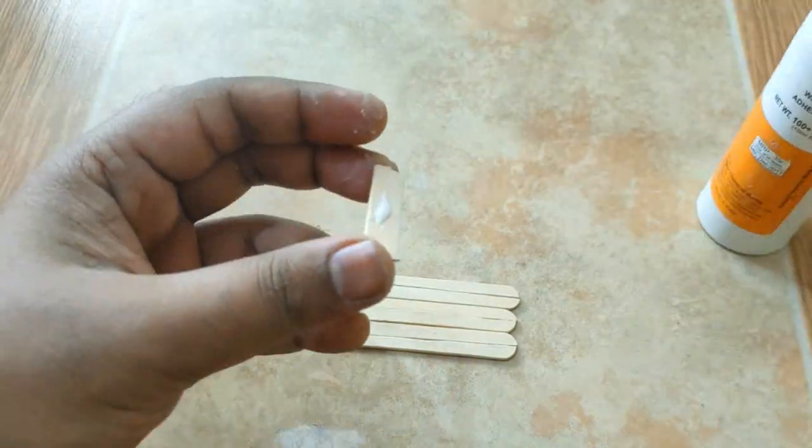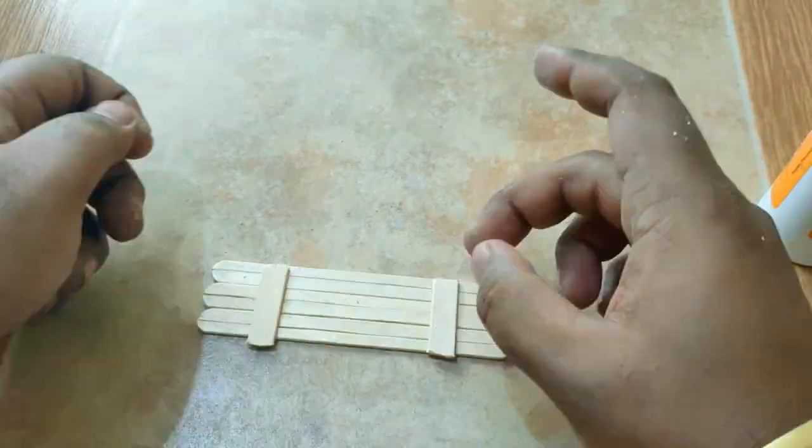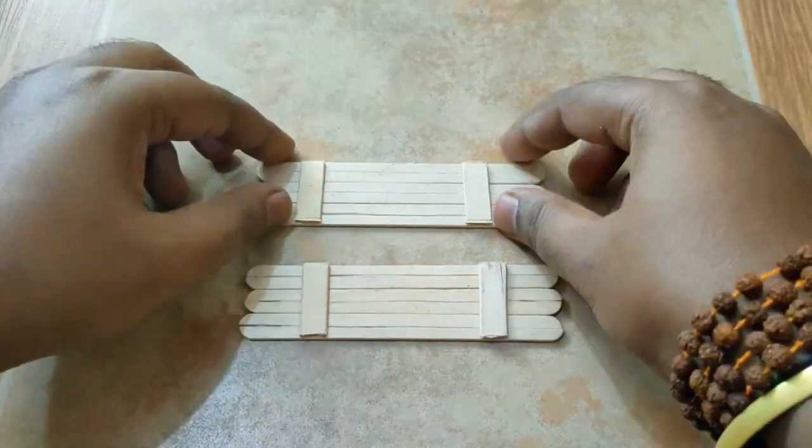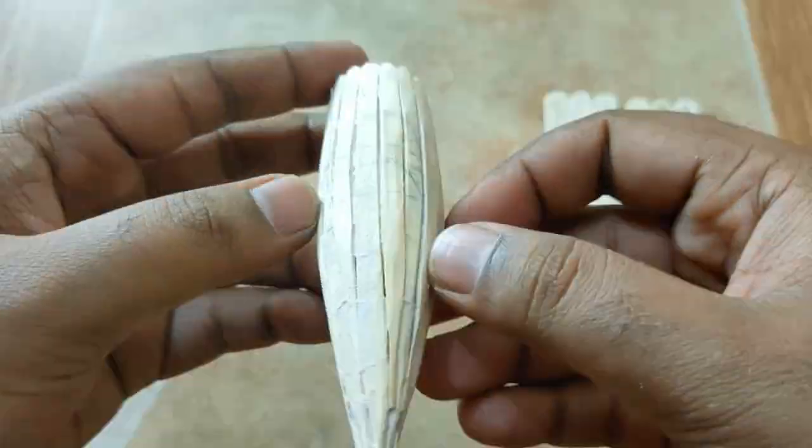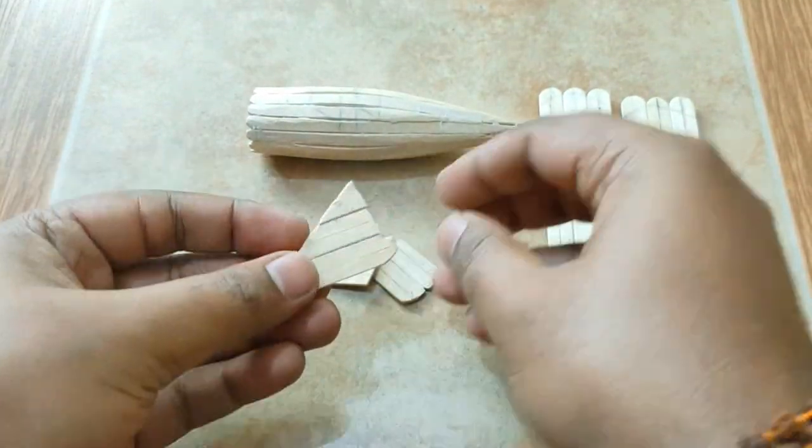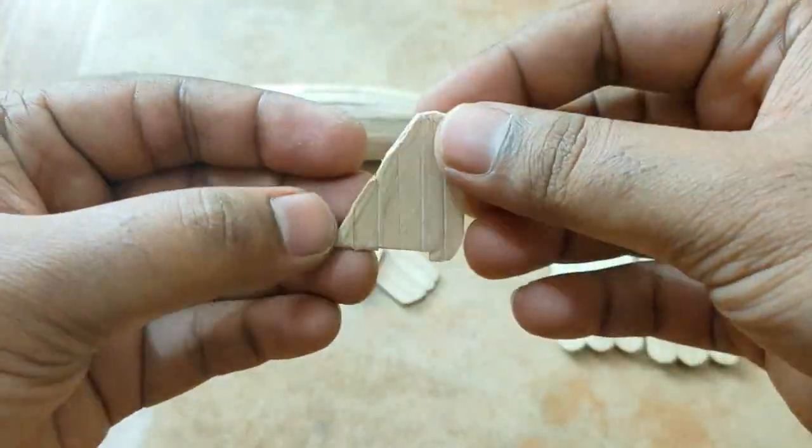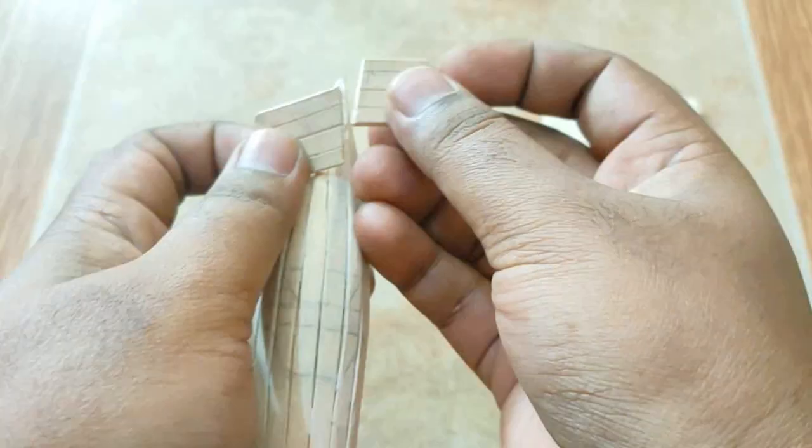With the same technique, we will make a small popsicle stick board with these sticks, two of them. Like this technique, I already cut out the small tail wings for the plane.